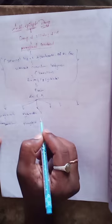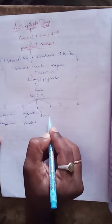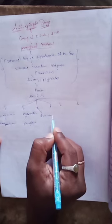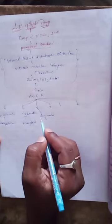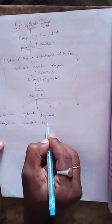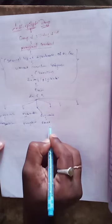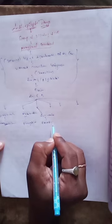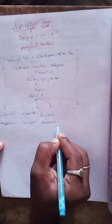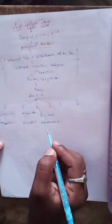Third classification is succinimides. The example of succinimide is ethosuximide.